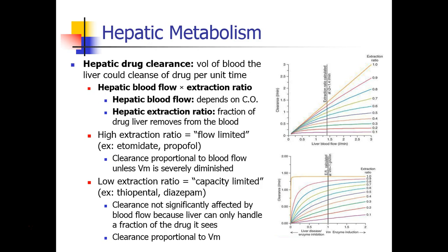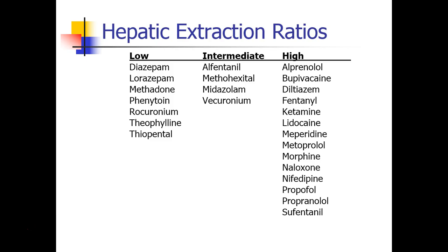These are graphs you need to sit and think about for a few minutes. There are lists of how different anesthetic drugs fall into the categorization of low, intermediate, or high extraction ratios. You don't need to memorize this for an exam, but you should be familiar with the idea. Propofol is a high extraction ratio drug, so it's flow-limited — the more cardiac output there is, the faster propofol will be metabolized. Compared with something like rocuronium, where we don't expect its metabolism to be affected much by cardiac output, but we do expect it to be affected when the metabolic function of the liver changes, such as in a patient with induced enzymes or liver disease.